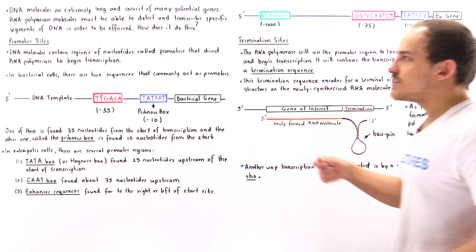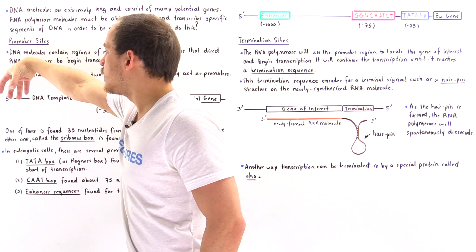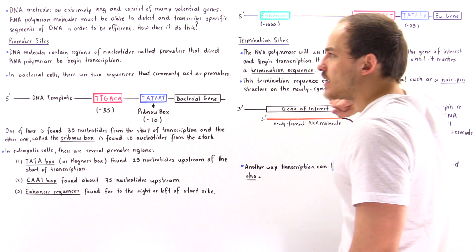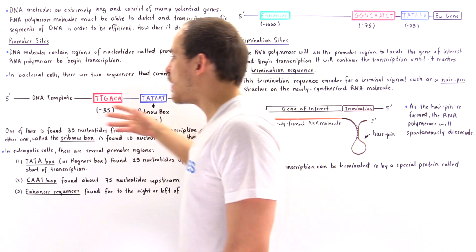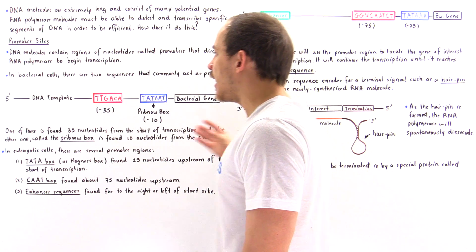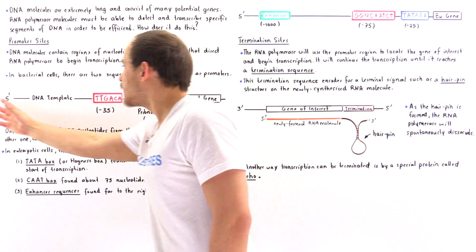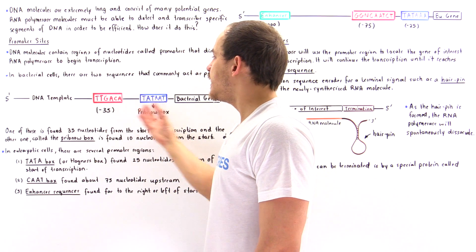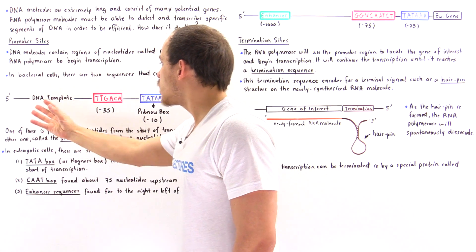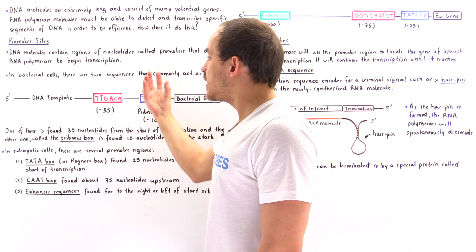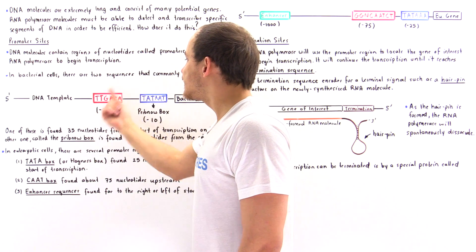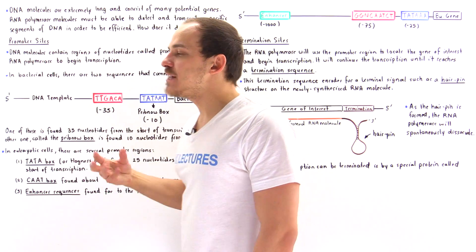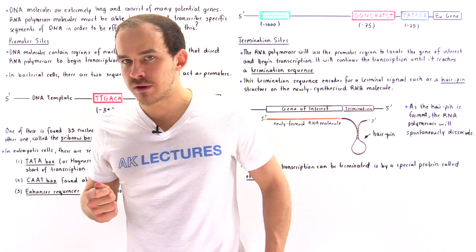As the RNA polymerase travels along the double-stranded DNA molecule in the bacterial cell, it moves very quickly until it locates these regions. It slows down because it binds well to these regions, and once it binds, it begins the process of transcription.